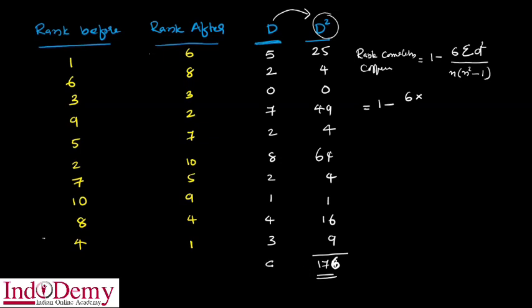Now we insert all values into the formula: 6 into 176, divided by n into n-squared minus 1. We check the number n by counting: 1, 2, 3, 4, 5, 6, 7, 8, 9, 10 — so n equals 10 individuals. This means 10 into 10-squared minus 1.